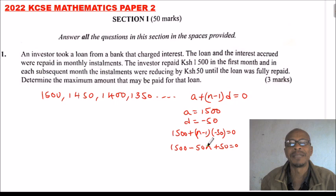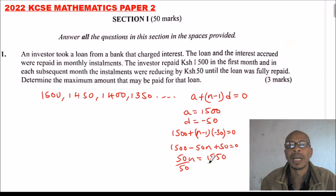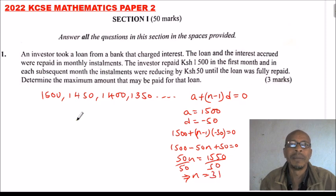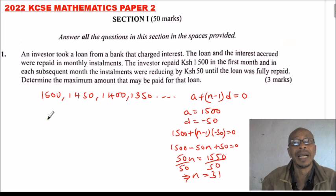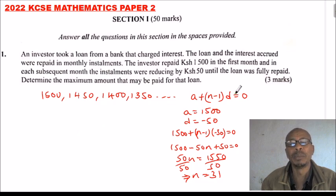If we add 1500 plus 50, that is 1550. Take 1550 to the other side, we have 50n is equals to 1550. Divide by 50, so we get n is equals to 31. So the number of terms for the loan to be completely paid, when the nth term is zero, the number of the nth term is 31.